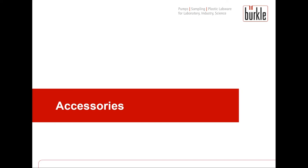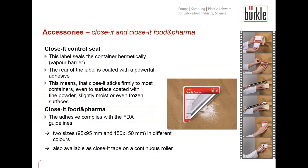To complete the range, Büeckle offers popular accessories. The Close It and Close It Food and Pharma labels are developed to close holes that occur during sampling directly out of big bags or bags. The back is coated with a powerful adhesive that sticks firmly on most containers, even surfaces coated with fine powder, slightly moist or even frozen surfaces. The Close It Food and Pharma version has an adhesive complying with FDA guidelines. Labels are available in two sizes, different colours, and also as Close It tape.